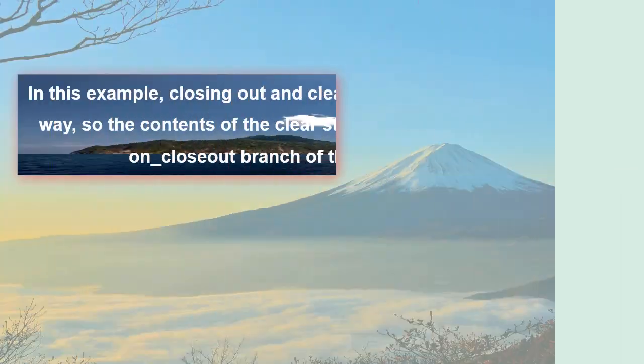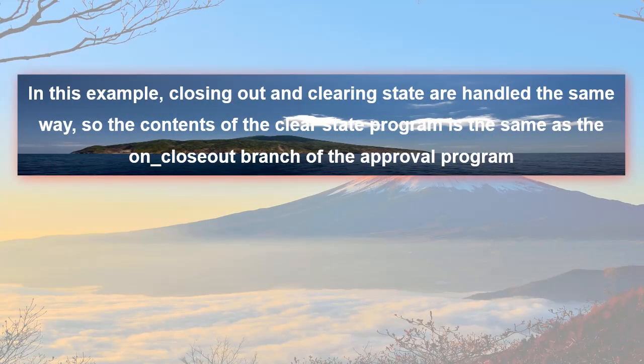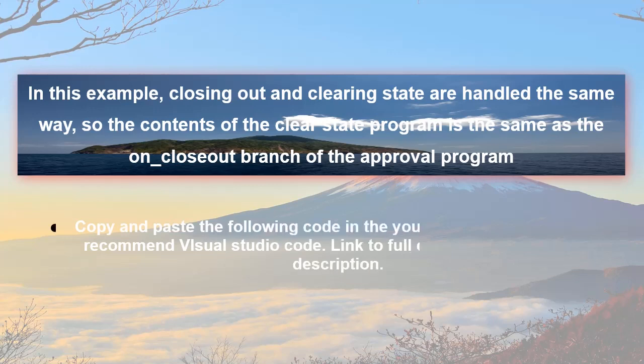In this example, closing out and clearing state are handled the same way, so the contents of the Clear State Program is the same as the on_closeout branch of the Approval Program. Copy and paste the following code into your editor. For simplicity, I recommend Visual Studio Code. The link to full code is available in the description.